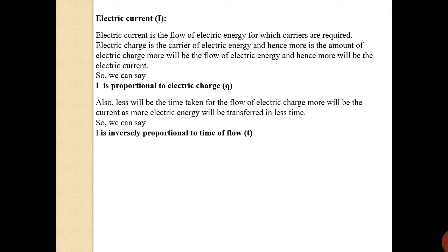The current flowing through the conductor is also related with the time for which the electric charge flows. The charges flowing through the conductor have different speeds. If the speed of flow is high, more energy will be transferred in less time and hence more will be the current. So if the time taken for the flow of charge is less, more will be the current, and vice versa. Therefore I is inversely proportional to time. Combining both: I is proportional to Q upon T, giving us the equation I = Q/T.